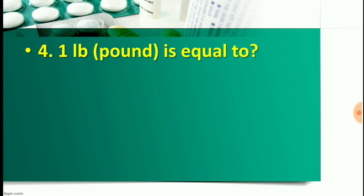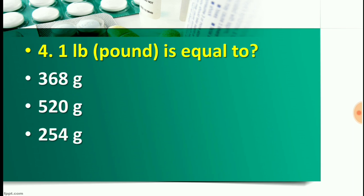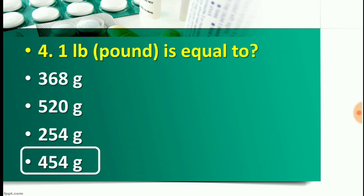Question number four: One pound is equal to — Option A: 368 gram, Option B: 520 gram, Option C: 254 gram, or Option D: 454 gram. This is a very important question already asked in many competitive exams. The right answer is Option D — 454 gram.